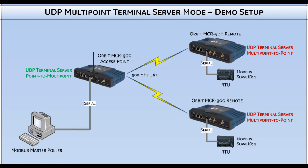Here is the setup that I will be demonstrating today. Using Orbit MCR900s, I have an access point with two connected remotes. Each Orbit remote has a Modbus RTU device off its COM1 serial port. For terminal servers, the access point will be configured for UDP point-to-multipoint, and the remotes will be UDP multipoint-to-point. This means that when the access point gets data on its serial port from the Modbus master, it will create a UDP packet and send it out to the multicast address. A static route was configured to direct how a multicast IP packet leaves the Orbit.